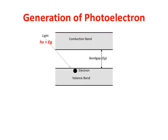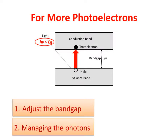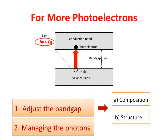From optoelectronic fundamentals, as light shines on the semiconductor, it transfers photo energy to the electrons in the material. When this energy is greater than the energy gap, an electron jumps up into the conduction band, becoming highly mobile, thus creating a photoelectron. Therefore, one way of getting more photoelectrons is to lower the band gap, and the other is to manage the photons so that their energy is bigger than the gap.